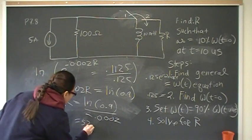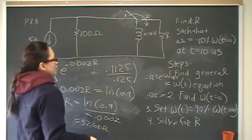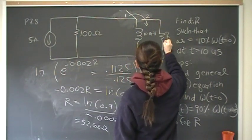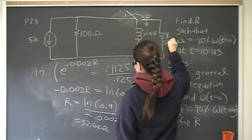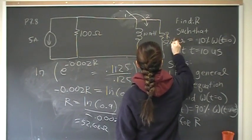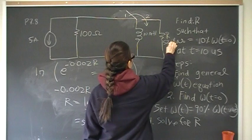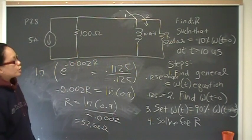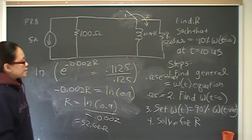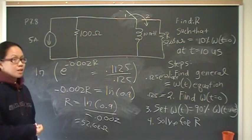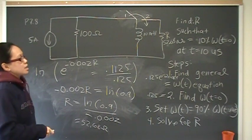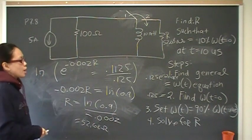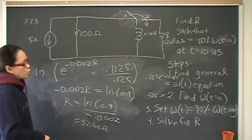you should get a value of R is equal to 52.68, 52.68 points. So that tells me that if I put in parallel with this 10 mH inductor a 52, obviously we don't have such a thing as 52.68 ohm resistor, but around 52, 50 ohm resistor, that resistor will dissipate 10% of the initial stored energy at 10 microseconds. So that's the answer to the problem, 52.68 ohms.